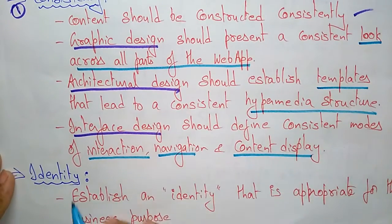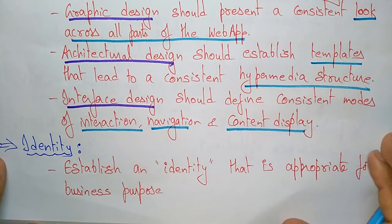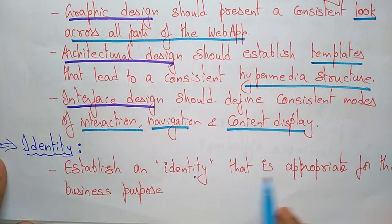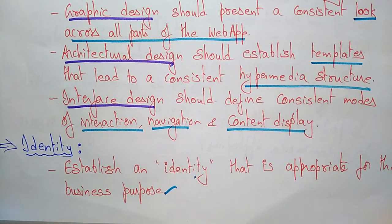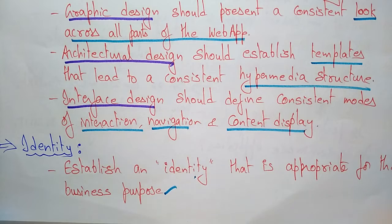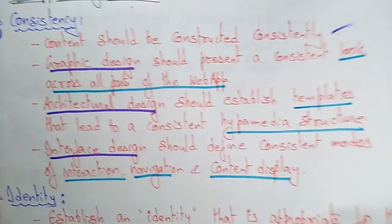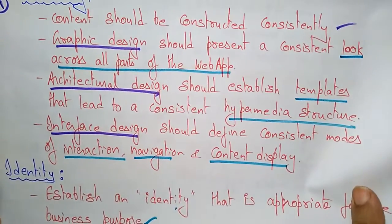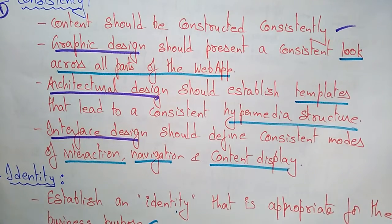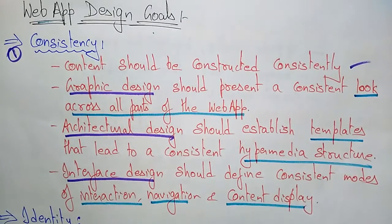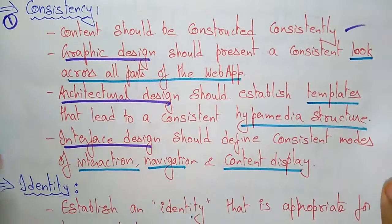The next web app design goal is identity — establish an identity that is appropriate for the business purpose. Whatever app you are using, you have to maintain one identity and that should be appropriate for the business purpose. There should be some awareness on that app; some identity has to be established. Your web app design achieves the goal if it is having a proper identity.